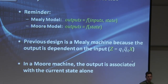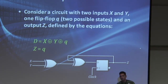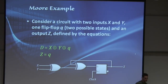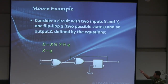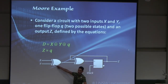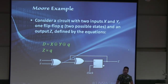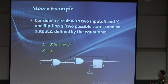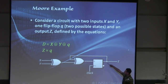But before we do that, let me give you an example of a Moore model machine. Take this circuit — it's a fairly simple one. We've got one flip-flop, which means two states, 0 and 1. The input to this flip-flop — the next state — is a function of both inputs X and Y, as well as the current state being fed back into the flip-flop. However, the output Z is only a function of the output of the flip-flop. In this case it's simply Q, but it could be some function involving whatever outputs from the flip-flops.